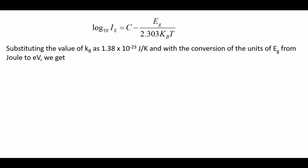If we take log of both sides and rearrange the terms, we get log of Is equals C minus Eg upon 2.303 Kb T. In this equation, Kb is Boltzmann constant and its value is 1.38 into 10 to the power minus 23 joules per Kelvin.